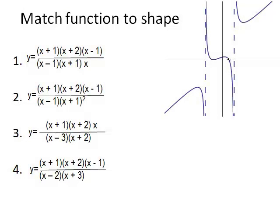Let us match the graph of a rational function with one of these four rational functions on the left. Now from the graph we can see that there are two vertical asymptotes.